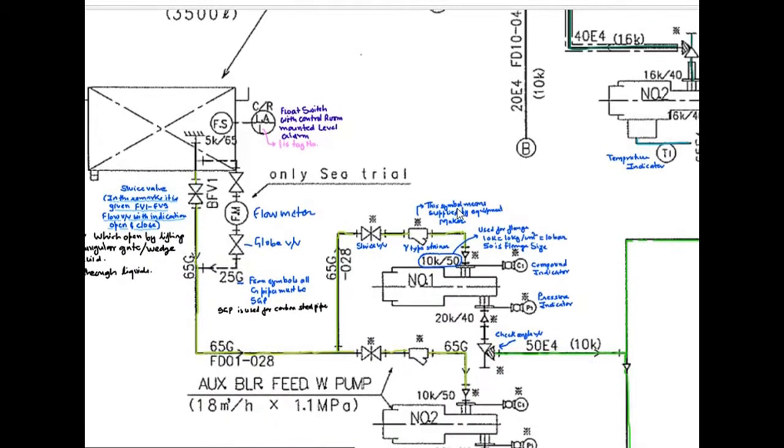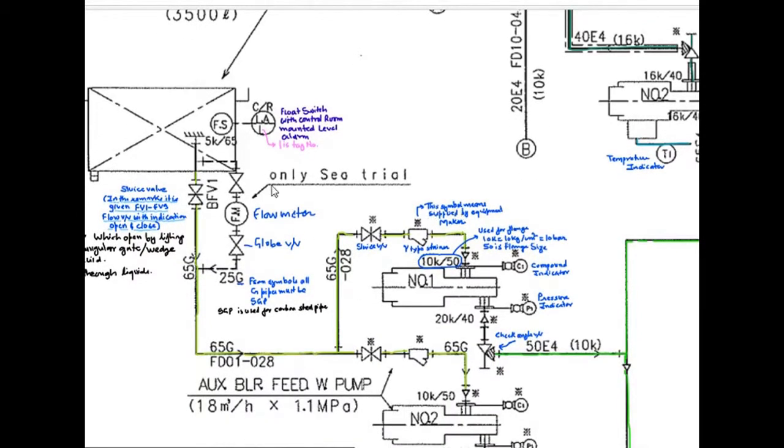After that, if we go down, we can see one marking is there only for sea trials. This is now they use only for sea trials. Flow meter is there. They want to calculate how much flow is there during the working of the boiler. But now at present, we have to omit this one. Here, flow meter is there. Globe valve is there. 25G.